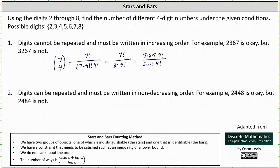Simplifying, four factorial divided by itself simplifies to one. Notice in the denominator we have three times two, which is six. Six divided by six simplifies to one, leaving us with seven times five, or 35 different four-digit numbers. There are 35 different four-digit numbers in which the digits cannot be repeated and must be written in increasing order.